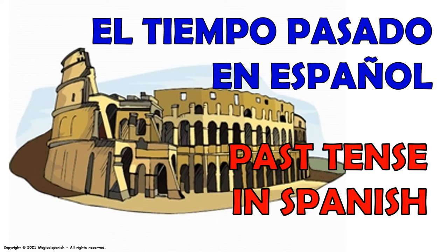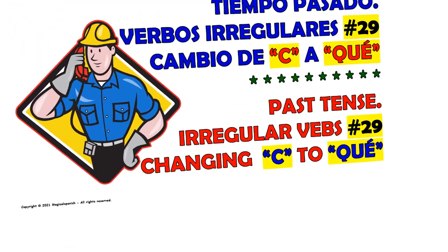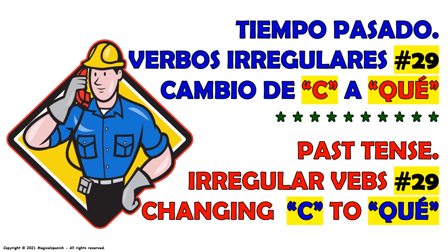El tiempo pasado en español. Tiempo pasado. Verbos irregulares, video número 29. Cambio de C a QUE.